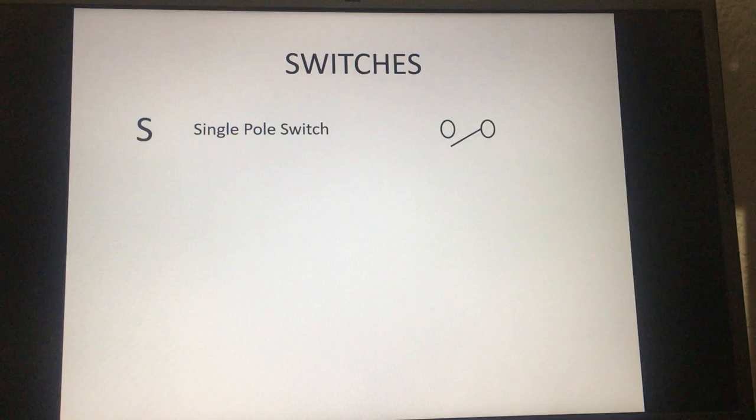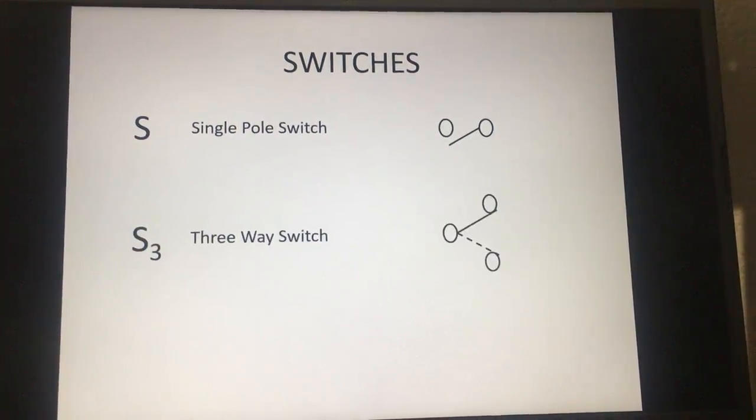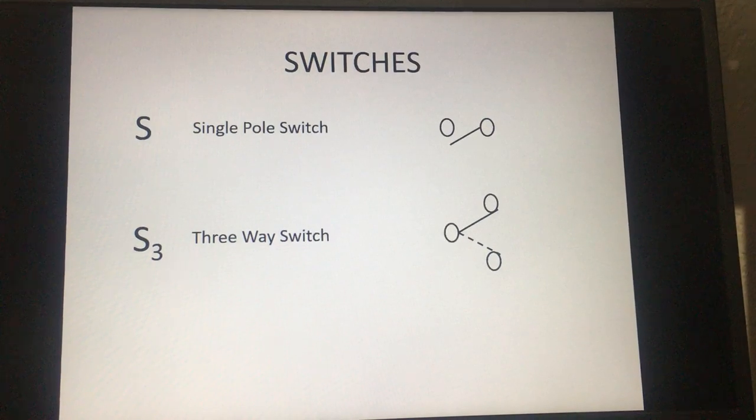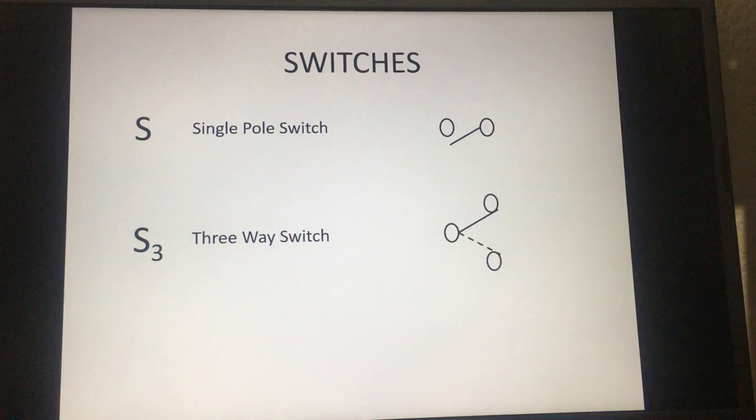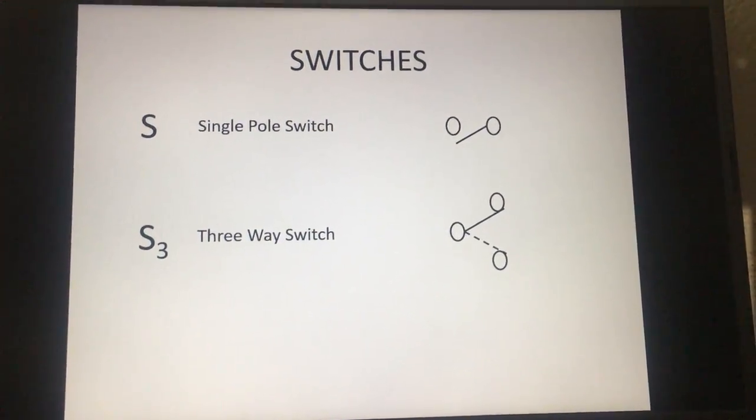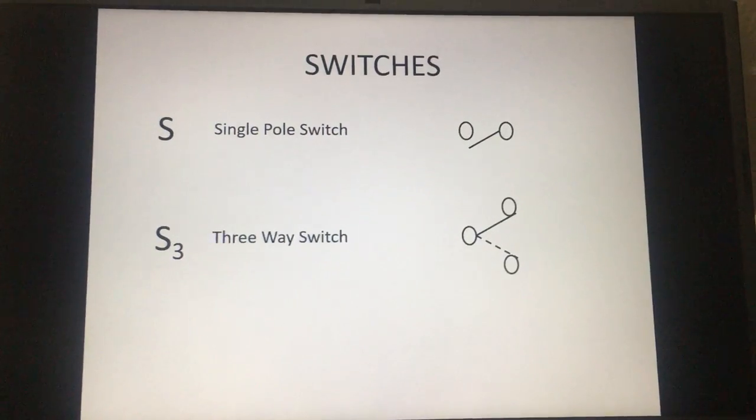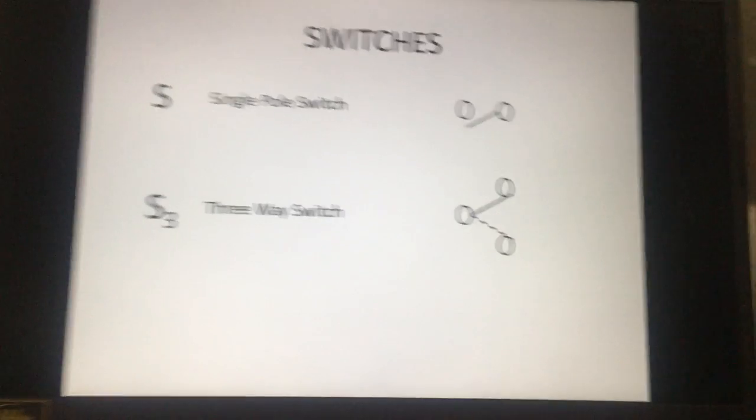Then you have an S3 which is a three-way switch, and that's where you'd find it between the stairs, bottom of the stairs and the top of the stairs. You got a switch that can turn on off the lights from either location, or you got a hallway or you got a room that has more than one entrance to it.